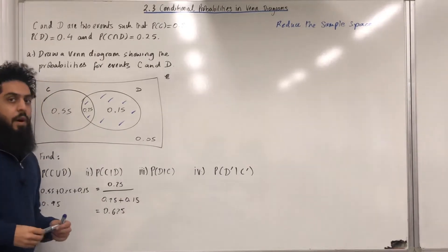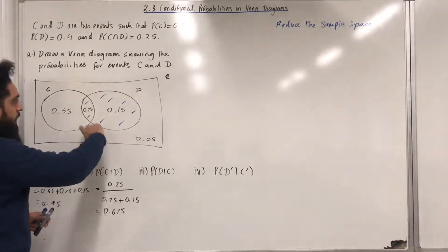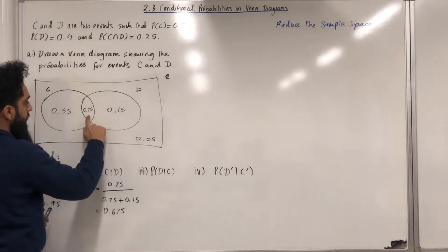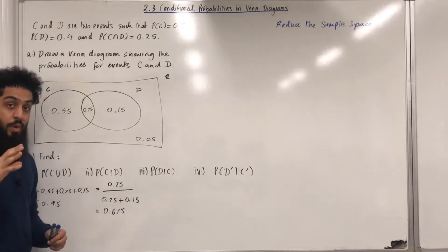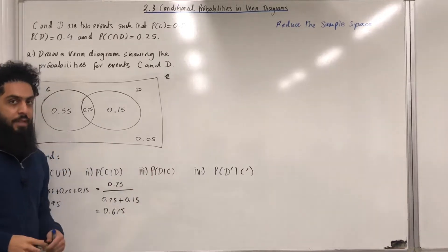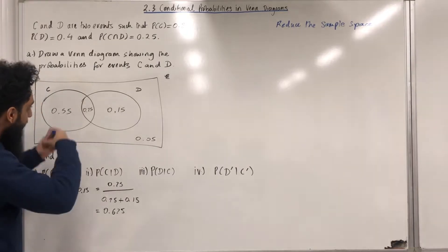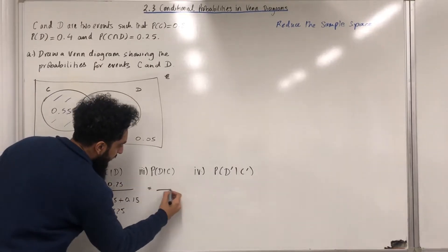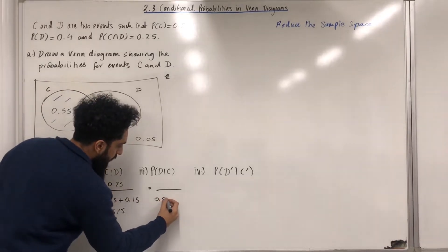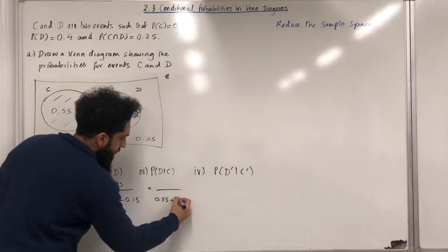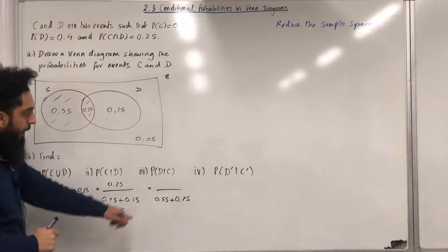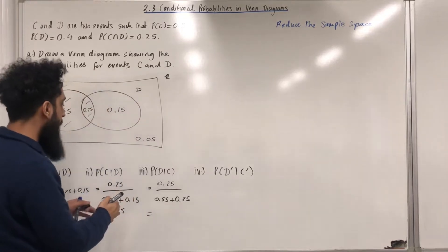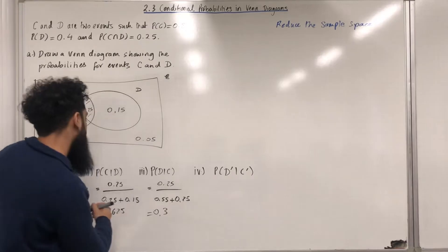Moving on to part 3. I'll delete the shading first. We want to find probability D given that event C takes place. The new sample space is event C, so I shade in event C. The probability will be out of 0.55 plus 0.25. For event C, the part that represents event D is 0.25, so 0.25 over 0.80, which gives 0.3125.